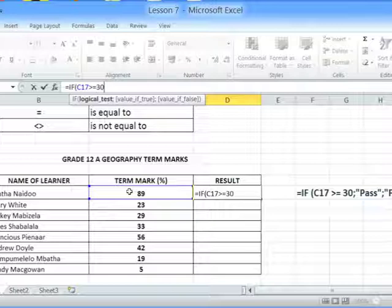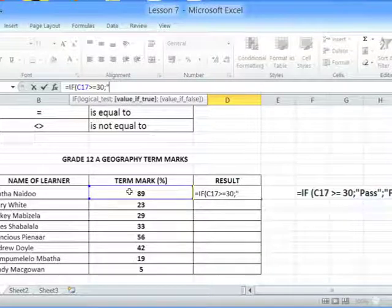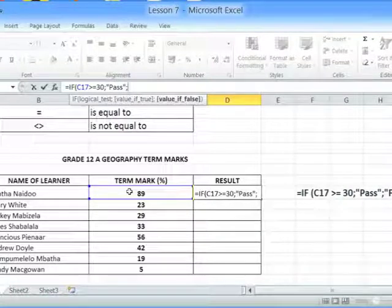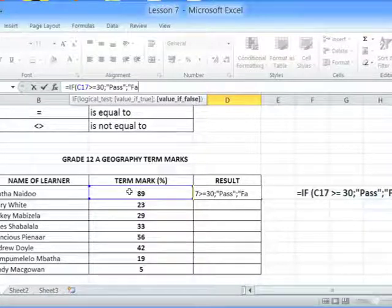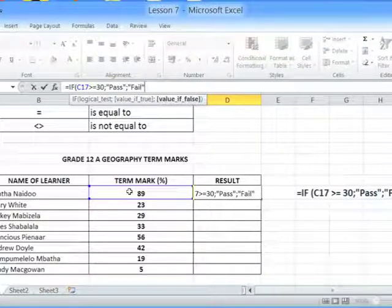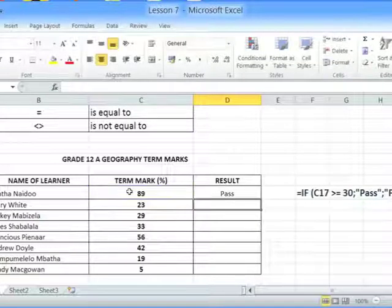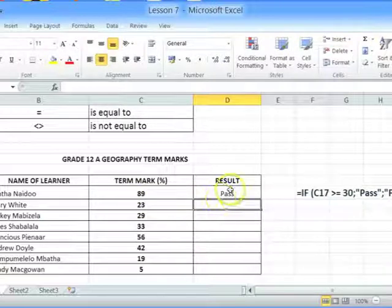And if that condition is true, then the learner will receive a pass. And if that condition is false, then the learner will receive a fail result. I close the bracket, press the enter key, and as you can see the result for Santha Naidu who obtained 89 percent is a pass.